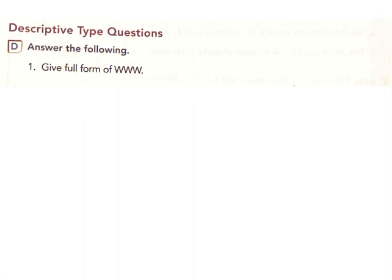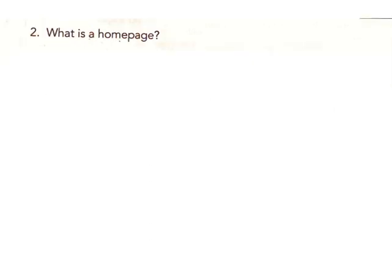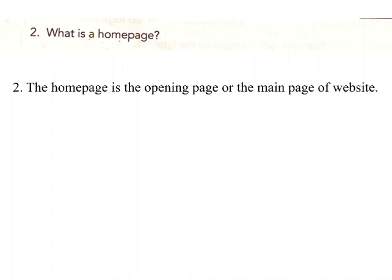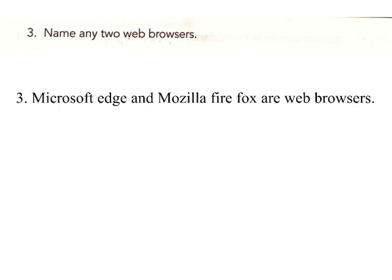Descriptive Type Questions. D. Answer the following. Question 1: Give full form of WWW. Answer: The full form of WWW is World Wide Web. Question 2: What is a home page? Answer: The home page is the opening page or the main page of a website. Question 3: Name any two web browsers. Answer: Microsoft Edge and Mozilla Firefox are web browsers.